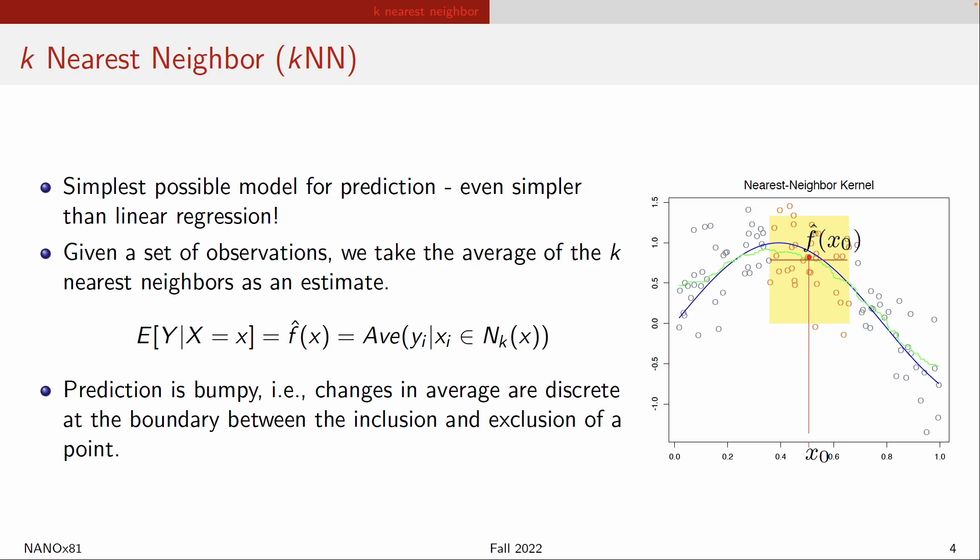The k-nearest neighbor algorithm is actually the simplest possible method for prediction — even simpler than linear regression. With simple linear regression you still have to do fitting; with k-nearest neighbor you don't actually need to do any fitting at all. You just take the average of the k-nearest neighbors and that's your estimate. The prediction tends to be bumpy, meaning that as you move your neighborhood from one area to another, it tends to create a sharp jump in your prediction.